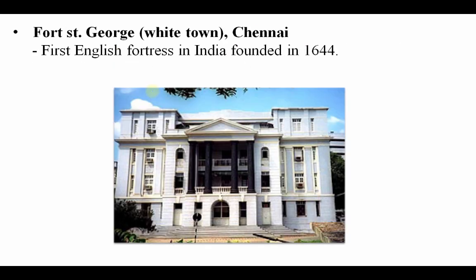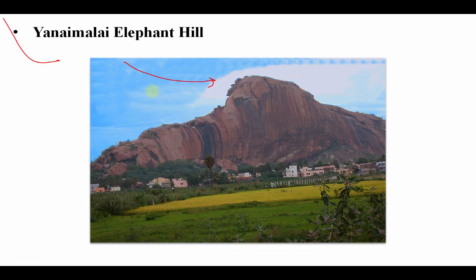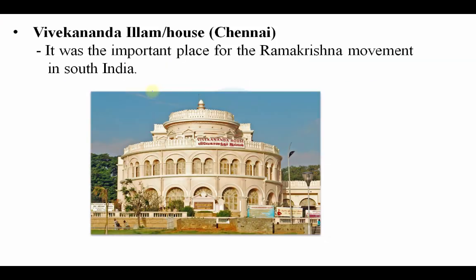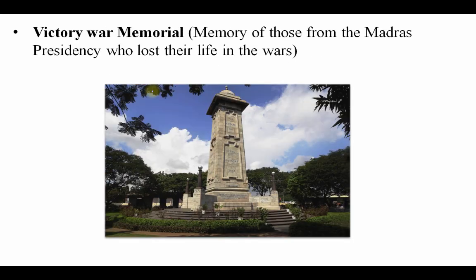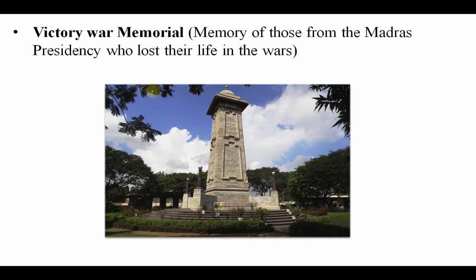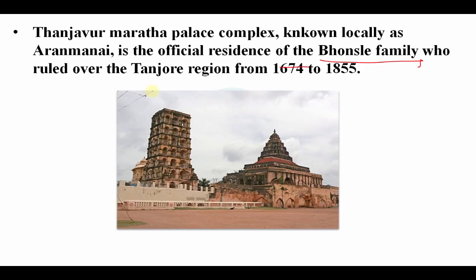So the important places from Tamil Nadu are: Ram Setu (Adams Bridge), Fort St. George, Thanjavur Maratha Palace, Yanamalai Elephant Hill, Ripon Building, Vivekananda House, Thirumalai Nayakar Palace, Victory War Memorial, and Vivekananda Rock.